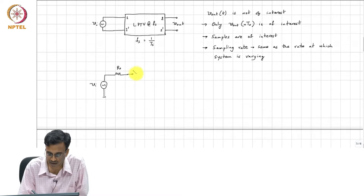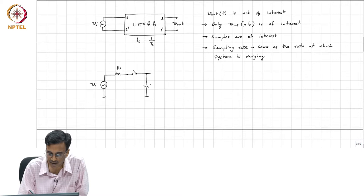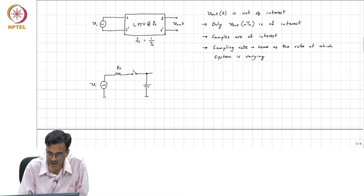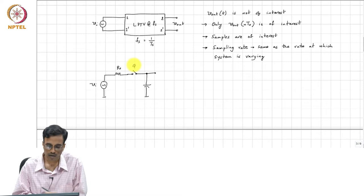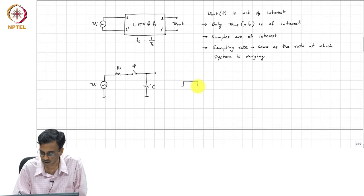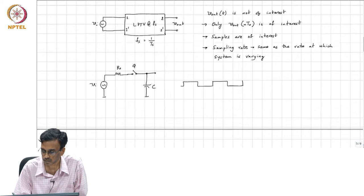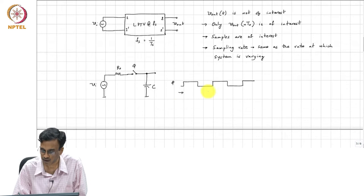So, let's say you are trying to build a sample and hold. The simplest form of sample and hold that you can think of or a track and hold is, this is a clock and this is a capacitance. And the switch is open and closed periodically with a duty cycle of say 50 percent. So, this is T_s.